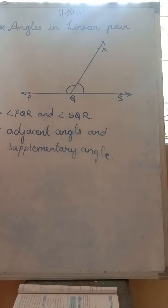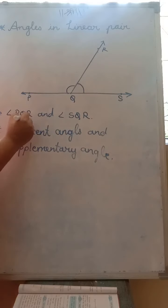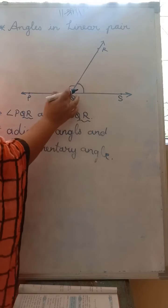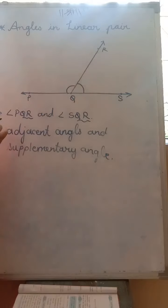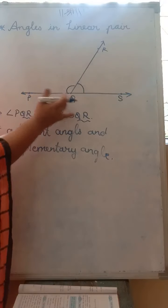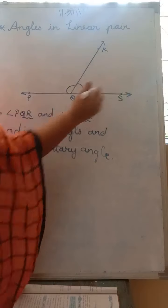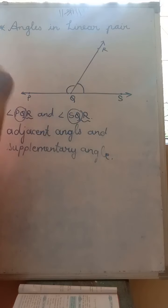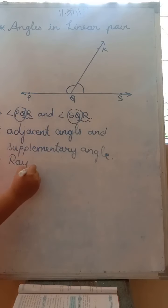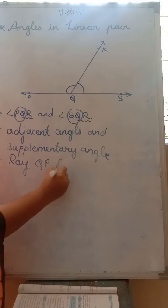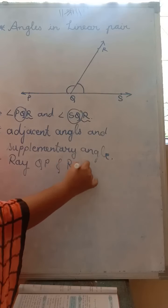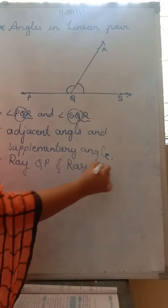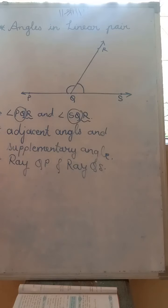Which arm of the angle is not the common arm? You can see QR and QR — this is the common arm. Then which is not a common arm? QP and QS. So ray QP and ray QS are not the common arms.